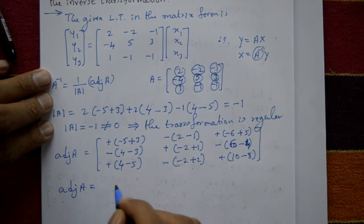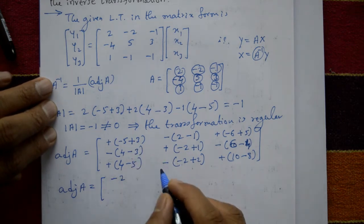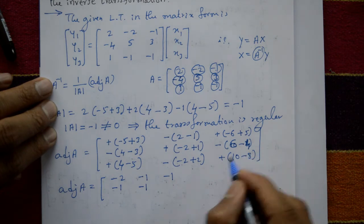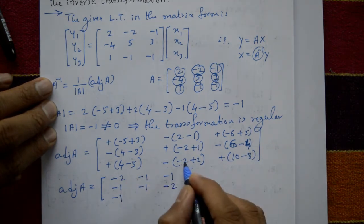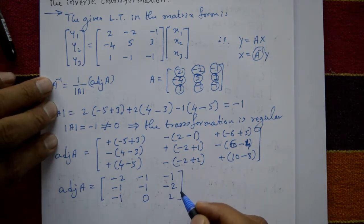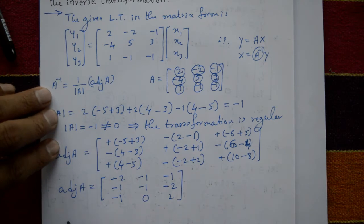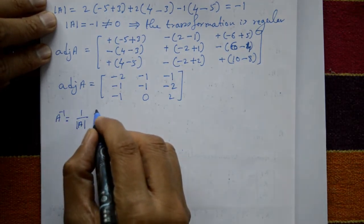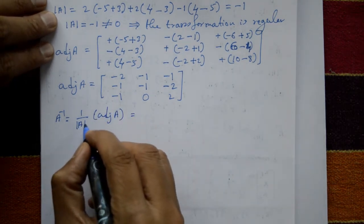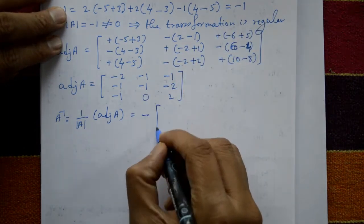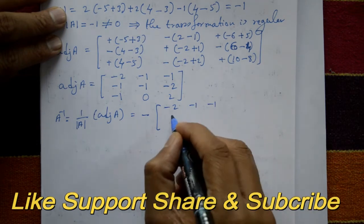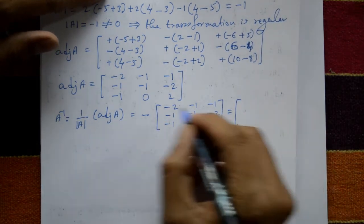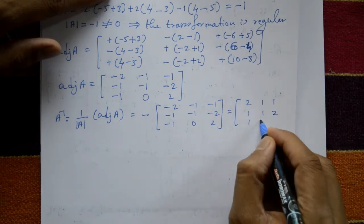Applying the plus-minus sign pattern, the adjoint of A is: [-2, -1, -1; -1, -1, -2; 1, -1, 0; ... 2]. The inverse of A = (1/det(A)) × adj(A) = (1/(-1)) × adj(A), giving a minus sign. Therefore inverse of A = [2, 1, 1; 1, 1, 2; 1, 0, -2].